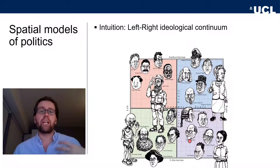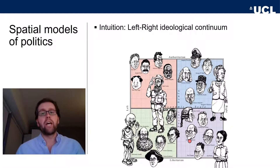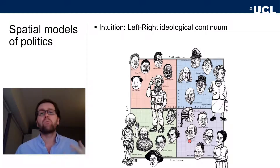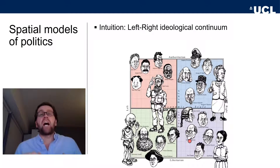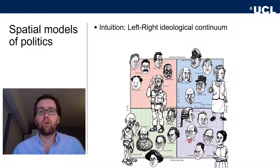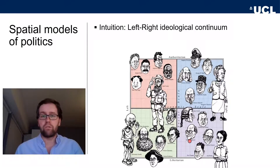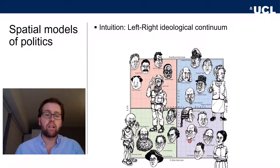Maybe some of you have taken something like a political compass, or vote advice applications — apps you can find when there's an election in your country — where you answer policy and ideological questions about your values. Often what comes out is a placement in a one or two-dimensional space. We often think of two underlying dimensions: one economic left-right dimension, from communism to free market capitalism, and another liberal-authoritarian dimension. This is how many of us think about politics without explicitly studying spatial models.